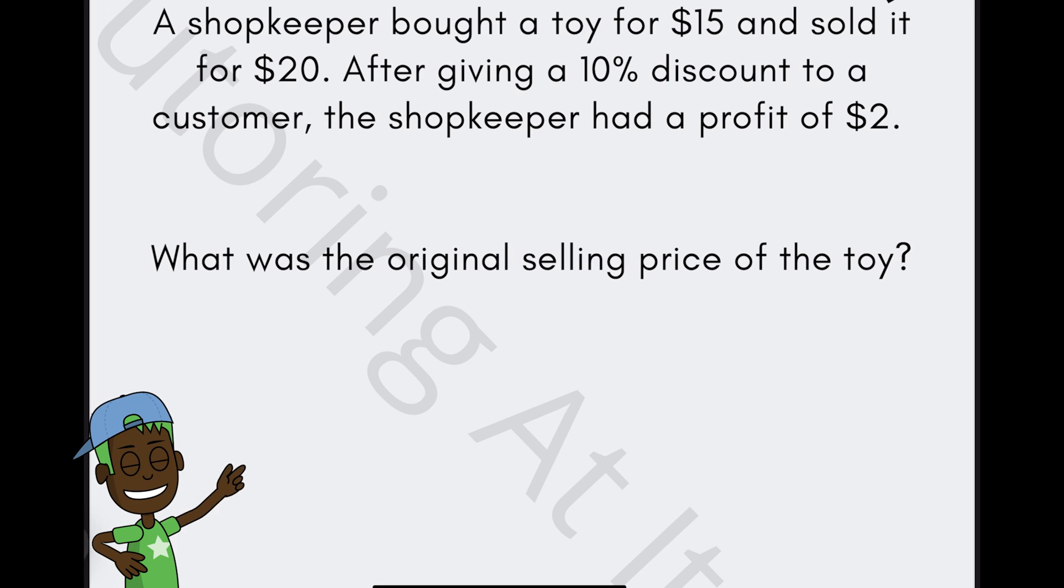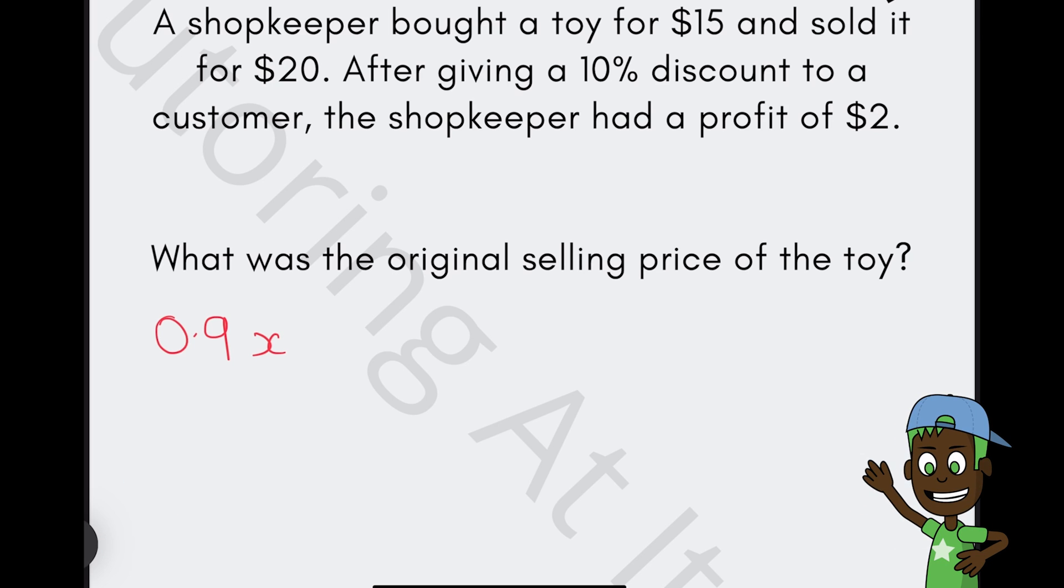Once we've got that as X dollars, we then will have the selling price after the 10% discount. So 100 is what we start with, take away the 10%, so we're left with 90%, and that's the X being the selling price of the toy. In order to get the profit, that's going to be the selling price after the discount minus the cost price. So we will start with $2, which will equal 0.9X minus the $15.